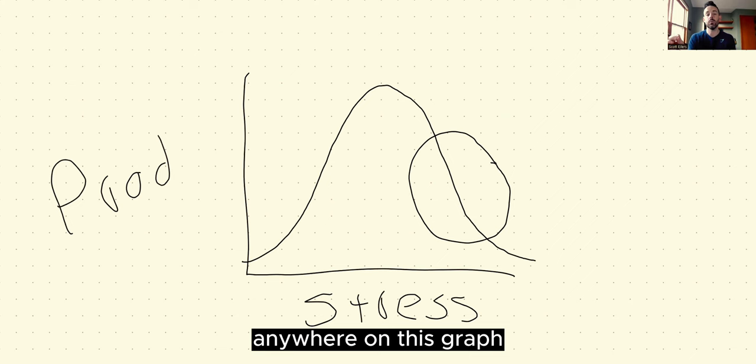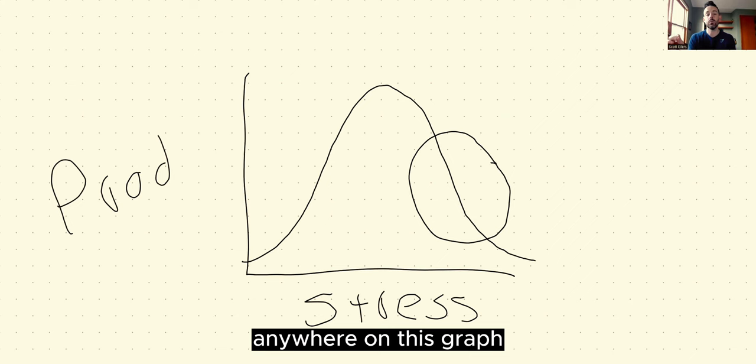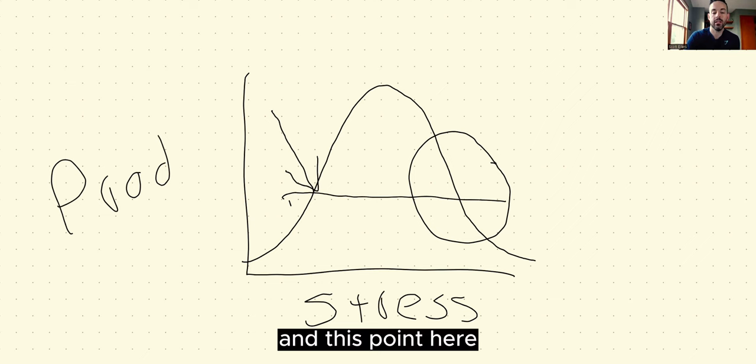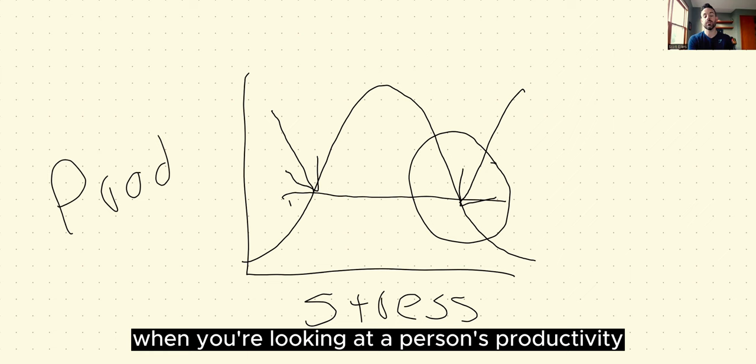And so if you draw a straight line anywhere on this graph, let's draw the line here for example. What I want you to see is that this point here and this point here look identical when you're looking at a person's productivity.